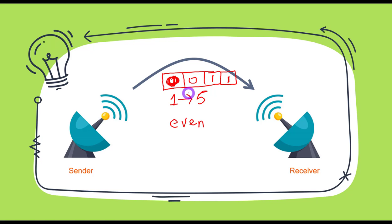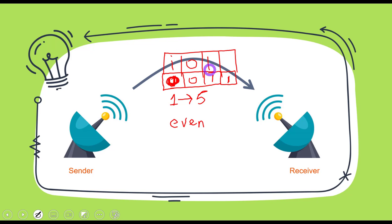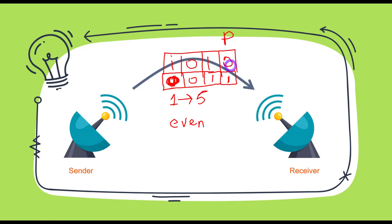We put a one in the parity bit to make the total number of ones in this four-bit message even. For example, if the message was 101, the number of ones are already even, so the parity bit will be zero because we are keeping the number of ones as even.